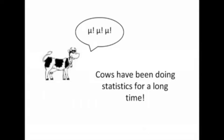Now, in case you thought that formula was really bad, cows have been doing statistics for a long time. Notice the Holstein on the left going moo, moo, moo. They're really intelligent creatures, been trying to communicate with us for years. Unfortunately for them, we live in a mathematically illiterate society.